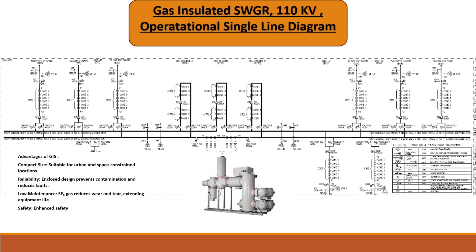AIS substations need more area — roughly four to five times more than a GIS substation of the same voltage level.